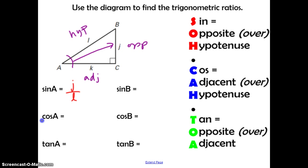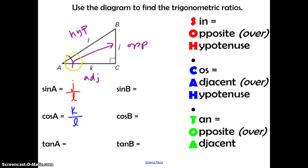The cosine of A equals the adjacent over the hypotenuse — side K over side L. The tangent of angle A equals the opposite over the adjacent — side J over side K. Now pause right now and try to find the sine of B, cosine of B, and tangent of B. After you think you've found them, press play to check your answers.